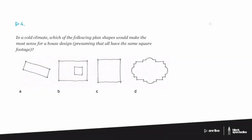Number four, in a cold climate, which of the following plan shapes make the most sense for a house design, presuming that all have the same square footage?